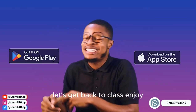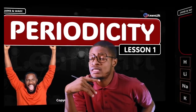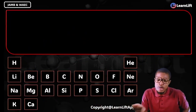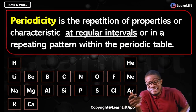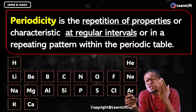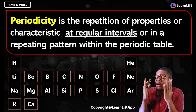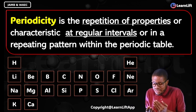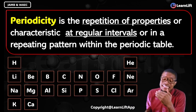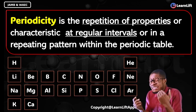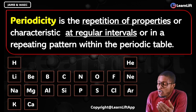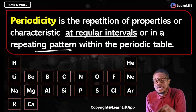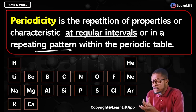Before we move, let's get back to class. First and foremost, what is periodicity? Periodicity is the repetition of properties. All these words must enter into you. Periodicity is the repetition of properties or characteristics at regular intervals or in a repeating pattern within the periodic table.